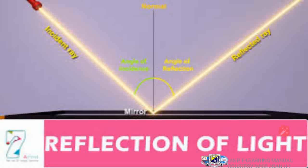Remember we talked in our last class about how we see objects, and this is due to reflection. Light coming from a source strikes this mirror, which is the object, and then moves to the other direction where anybody standing can see it.